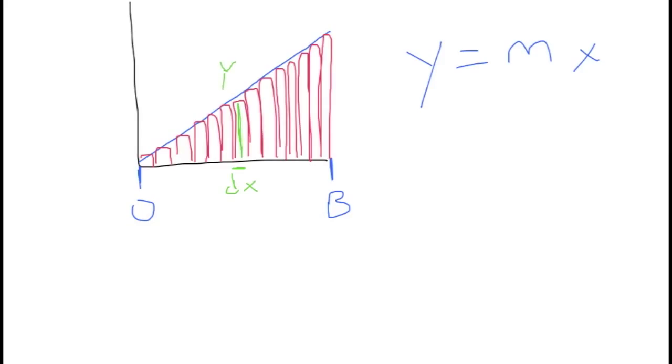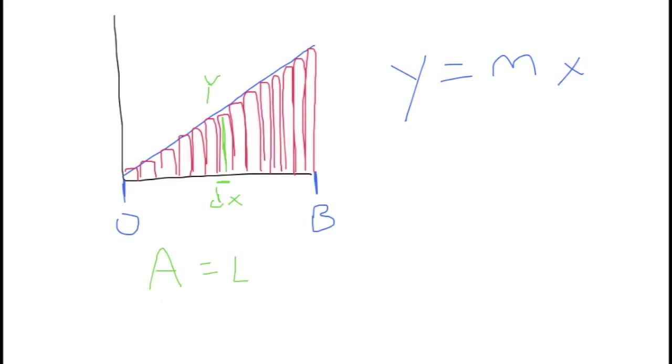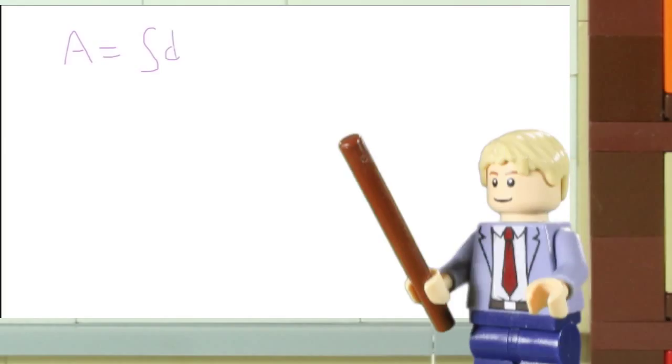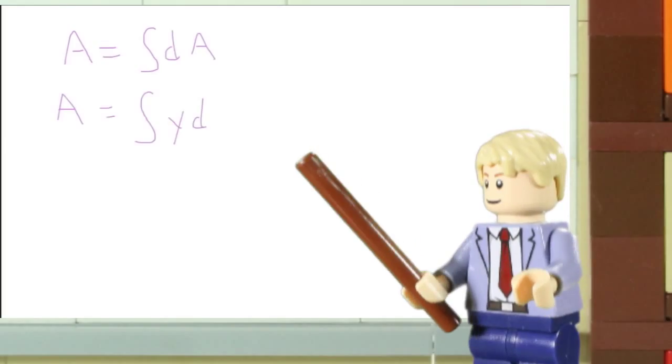The area of a macroscopic rectangle is length times width. Our tiny rectangles have a tiny area, dA, which is equal to the width dx times the height y. When we take an integral, we are adding up all of the tiny areas to get the total macroscopic area. I'm going to set up my integral and substitute out dA for y dx from our picture.